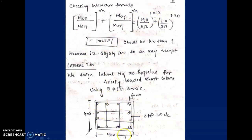We provide 12 bars of 25 mm diameter equally distributed on all four sides, with 60 mm cover and 8 mm diameter lateral ties at 300 mm center to center. The lateral tie design is the same as for the axially loaded column. This concludes our discussion of all three column types: axially loaded, uniaxial, and biaxial short columns.